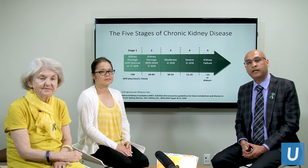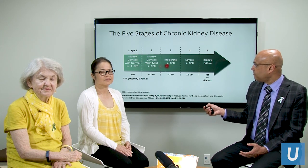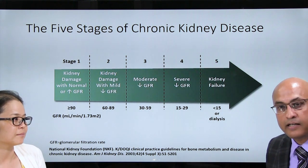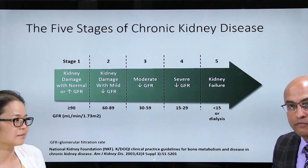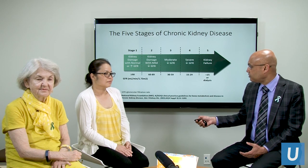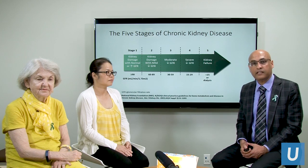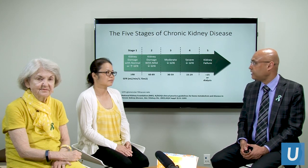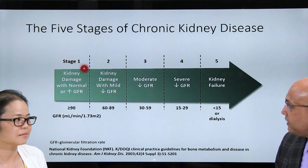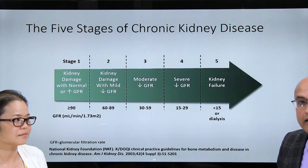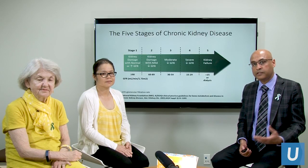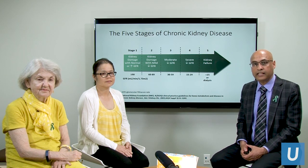Before we get into dialysis, a quick recap for patients with advanced kidney disease. This slide shows the five stages of chronic kidney disease, called CKD, which are defined based on GFR. I urge all audience members with kidney disease to know their creatinine levels, from which we calculate GFR — the single most important test to assess kidney function. Based on GFR, patients are classified from stage one through stage five, where kidney replacement therapy becomes necessary.